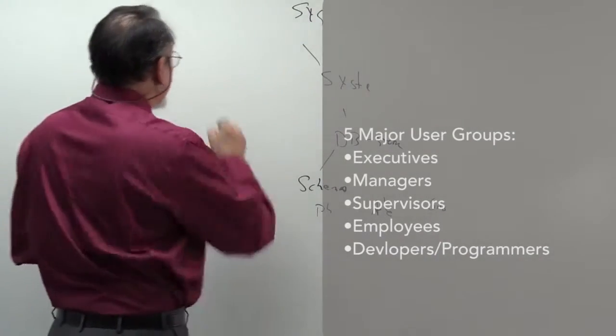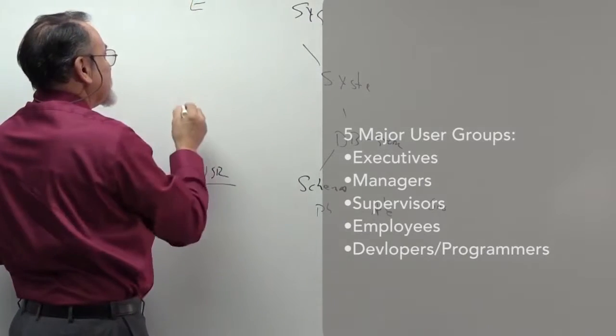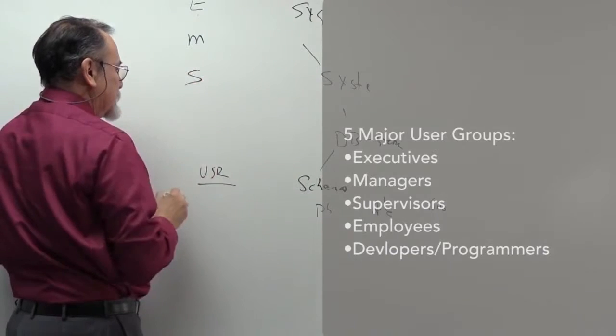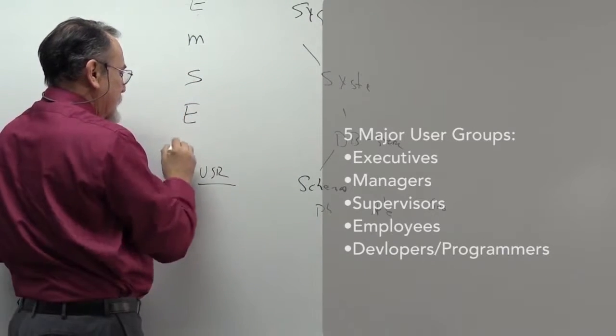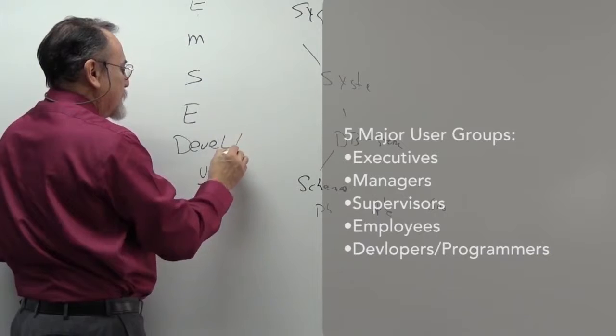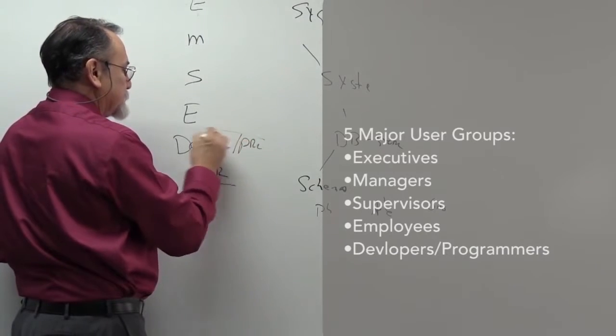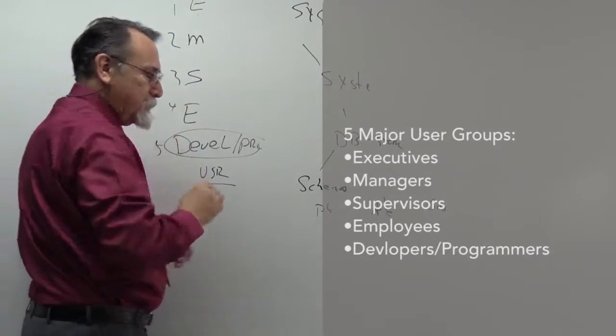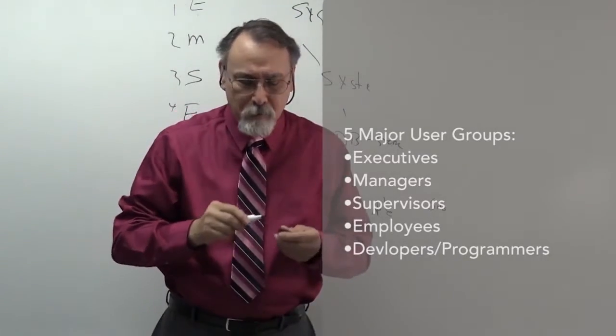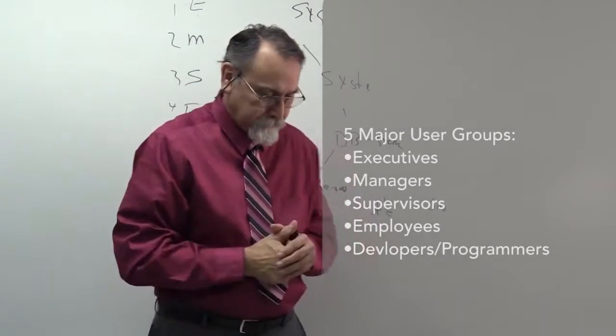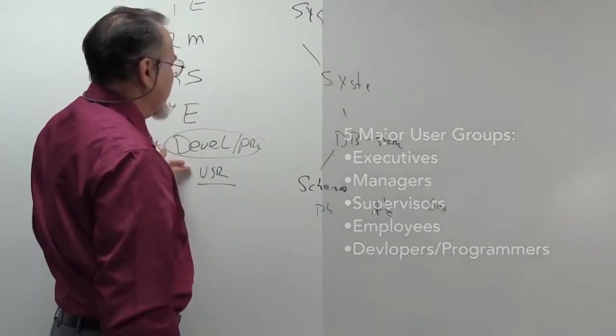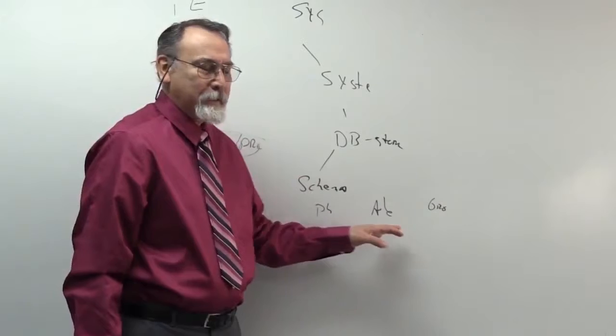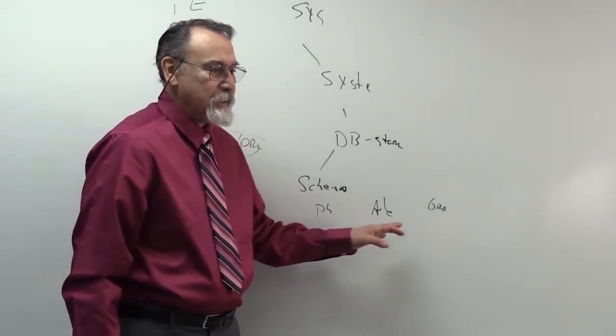There are usually five groups of users: the executives, the managers, the supervisors, the employees, and then the actual developers or programmers. So you have five major categories that you have to work with. These are going to be the major users, and then these are going to be the items, the modules, the schemas they will be using.